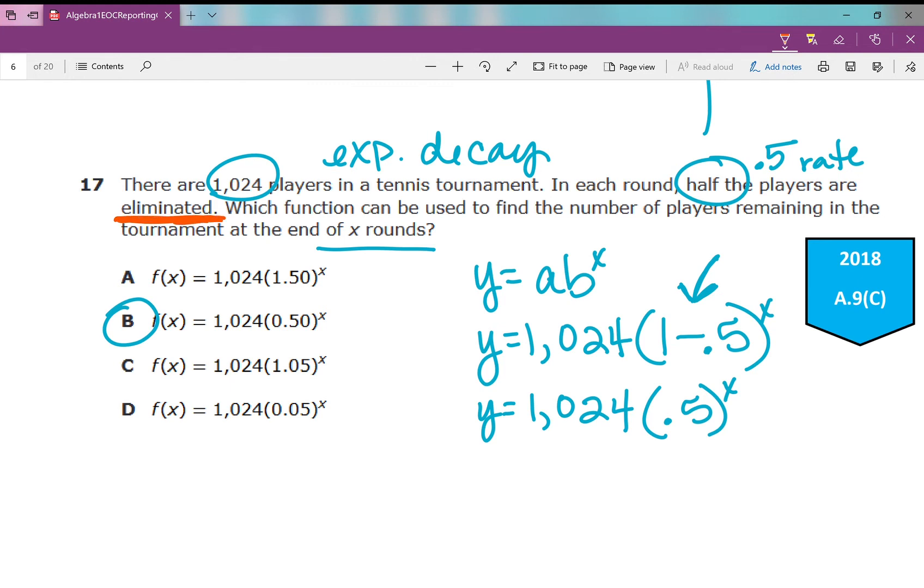Now, if I were to go through and maybe eliminate some answer choices, I know that half of the players are being eliminated, which means it's going down. The number of players is decreasing. So if let's say I don't really know how to set up my equation, I might look at this and know that's growth. It's not going to be that. That's growth. It's not going to be that. And then at that point, if you still can't come up with your equation, you choose between B and D. But you've increased your chances of getting the answer correct from 25% to 50%.